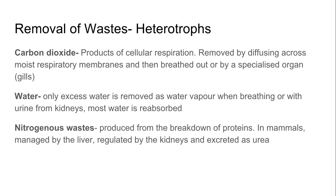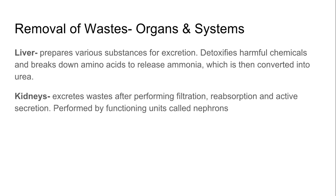We also have to remove nitrogenous waste, which is managed by the liver but regulated by the kidneys and excreted as urea in mammals. The liver prepares substances for excretion — it detoxifies harmful chemicals and breaks down amino acids to release ammonia, which is then converted to urea as a less toxic form. The kidneys also excrete waste after performing filtration, reabsorption, and active secretion, a process performed by functioning units called nephrons.